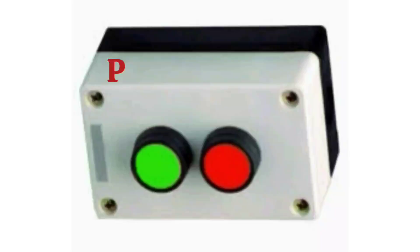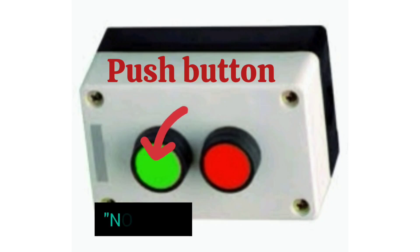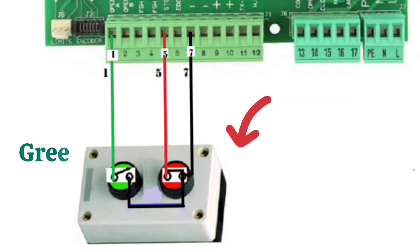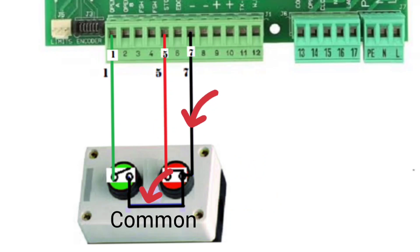Step 3, accessories. Push button. Push button station consists of green button which is NO type and a red button which is NC type. Connect green button to terminal 1 on control board. Connect red button to terminal 5 on control board. Common of green and red button is connected to terminal 7 on board.